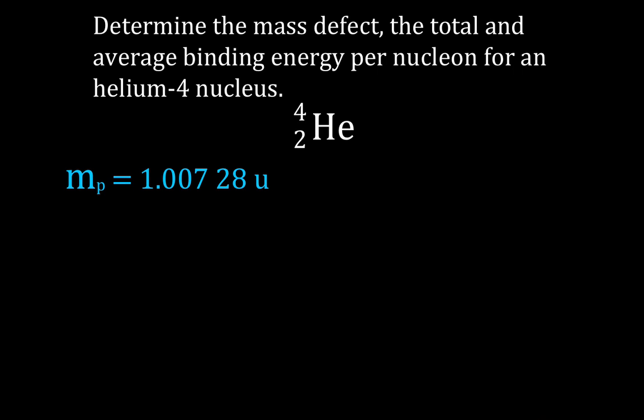We're going to look those up — these are kind of like givens. You look them up on the internet, or maybe they're given to you in the problem. We know the mass of a proton, and we know the mass of a neutron. Those are given in atomic mass units, U for atomic mass units.